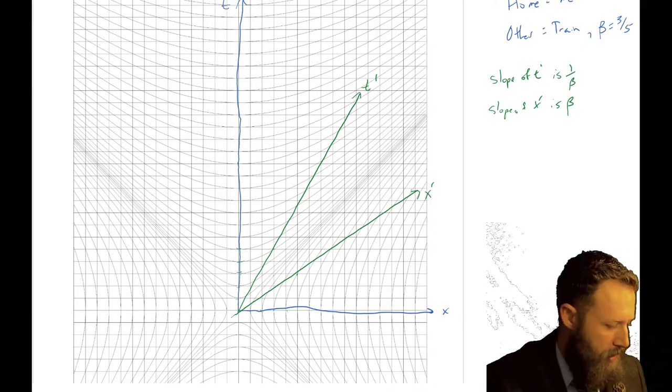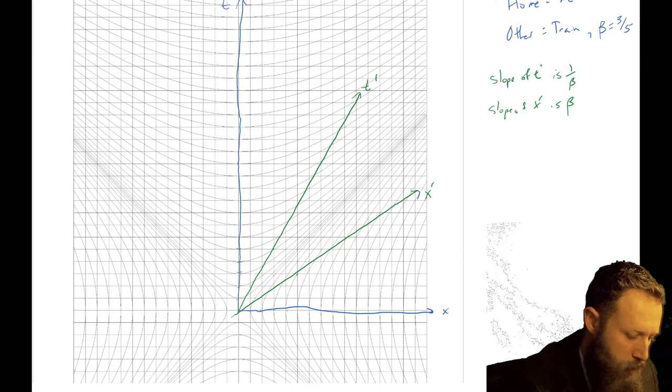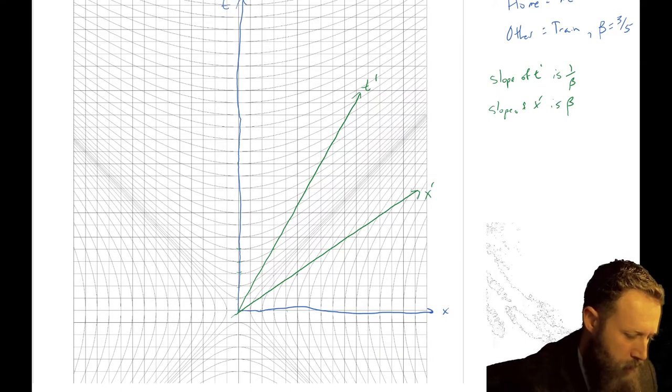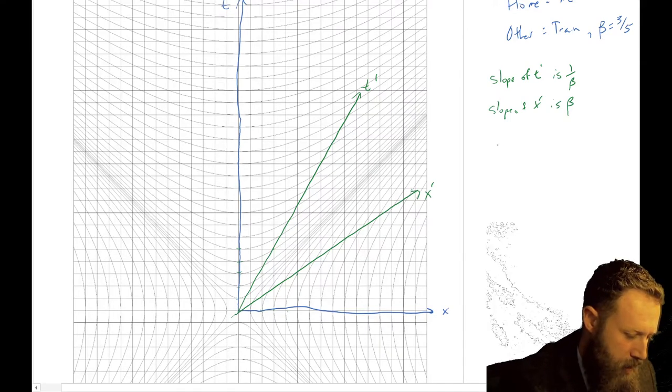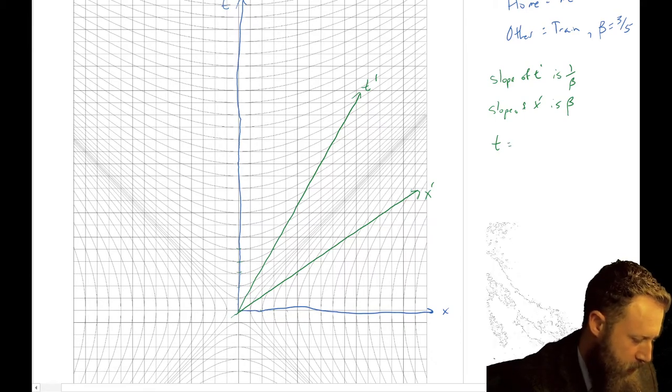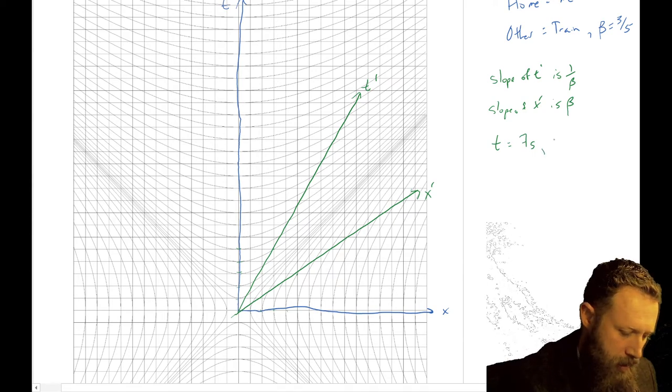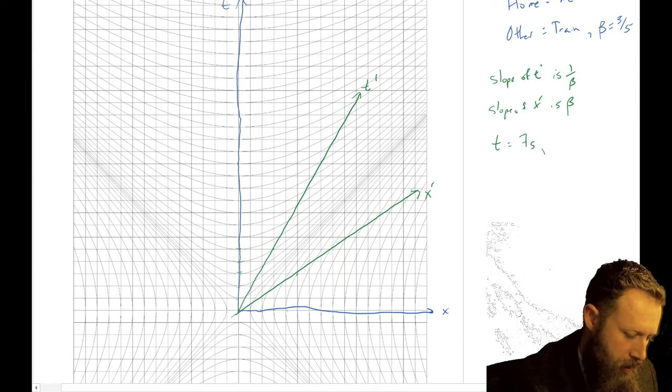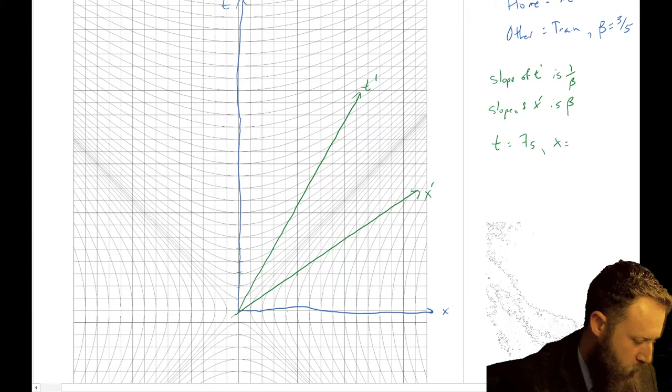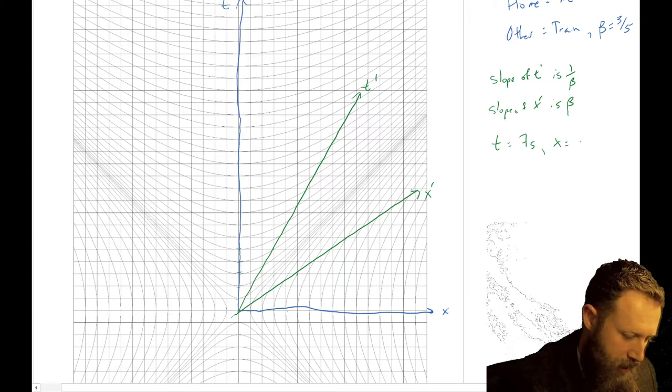So we have this diagram that we set up in the last video. Let's just find a point, let's just plot a point where t is equal to, let's say, 7 seconds, and x is equal to, let's say, 9 seconds. Let's do that.